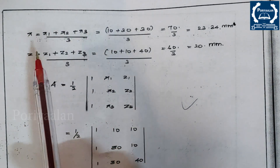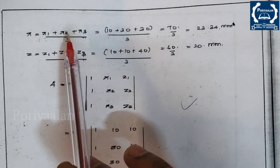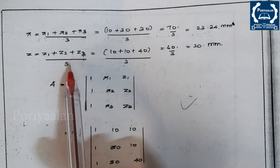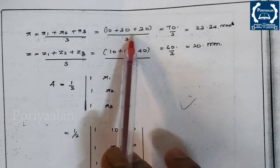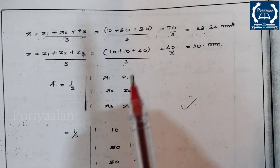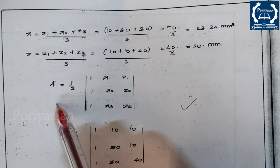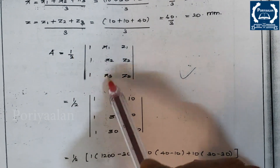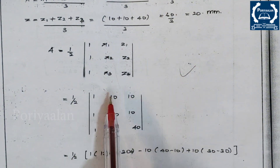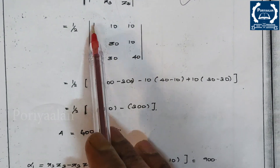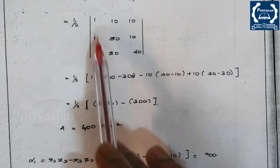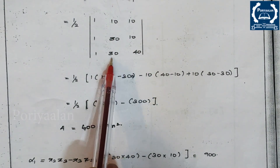Next, find the R̄ and Z̄ values: R̄ = (R1+R2+R3)/3 and Z̄ = (Z1+Z2+Z3)/3. Then compute the area using the determinant formula: Area = (1/2)|[1,1,1; R1,R2,R3; Z1,Z2,Z3]| = (1/2)|[1,1,1; 10,30,30; 10,10,40]|. Expanding the determinant by the first row.